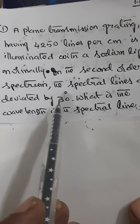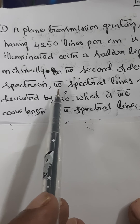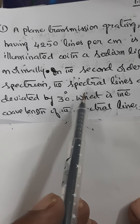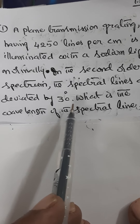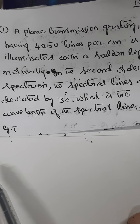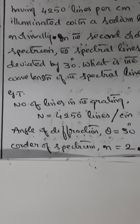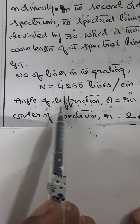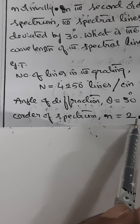So what is given here? Number of lines in the grating is given as 4250, that is N is given. Angle of diffraction theta is given as 30 degrees. And it is the second order spectrum, therefore the order of the spectrum is given as 2, that is small n is equal to 2.